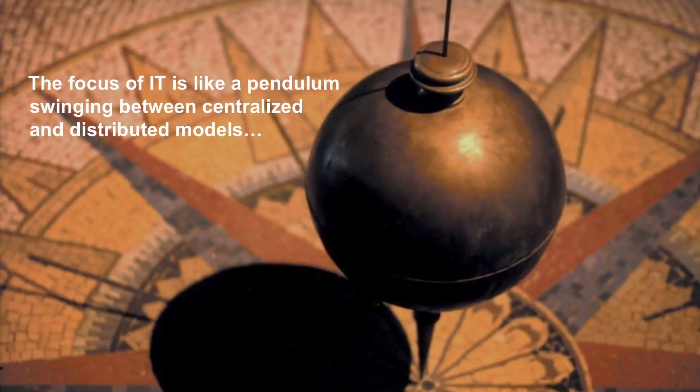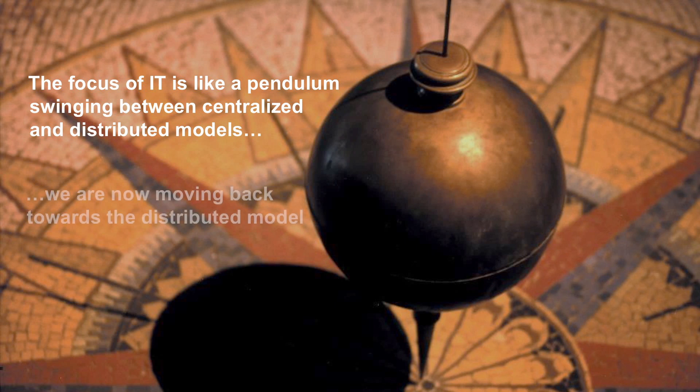But before we talk about that, let's talk about the history of IT and how it's been deployed historically. Initially, IT was deployed in a centralized fashion — that was mainframe computing. Later on, it transitioned to a more decentralized model in the client-server network. The pendulum then swung back towards a centralized model of cloud computing, and it's now moving back to a decentralized model in the form of edge computing.